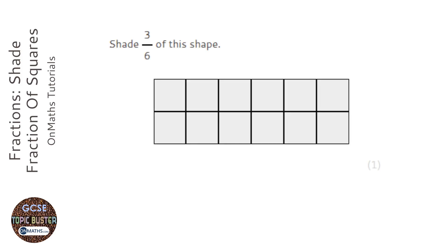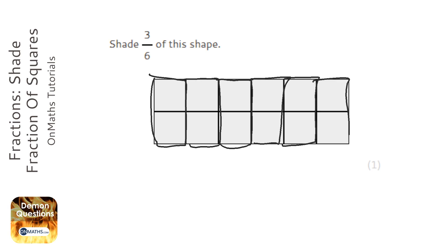We're asked to shade in three-sixths of this shape. So if I cut this shape into sixths going downwards, we're asked to shade in three of them.